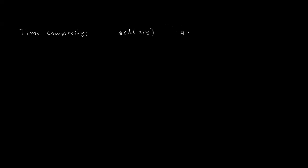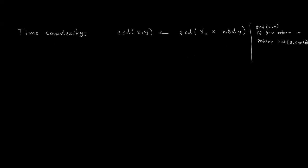Time complexity: we compute GCD(x, y) by recursively computing GCD(y, x mod y). To analyze this, we need to see how much the value sent recursively is reduced per iteration.